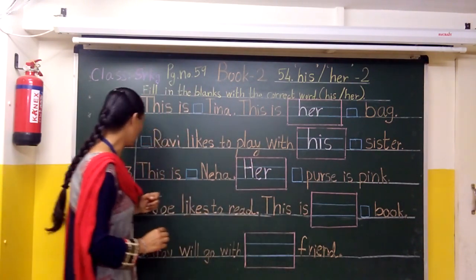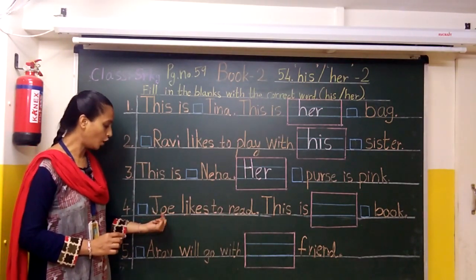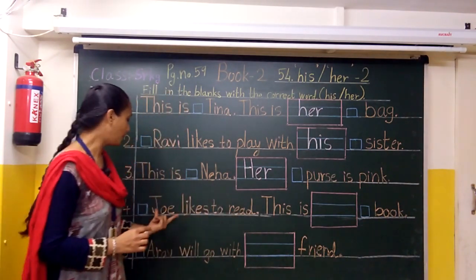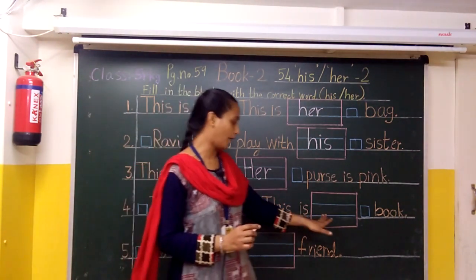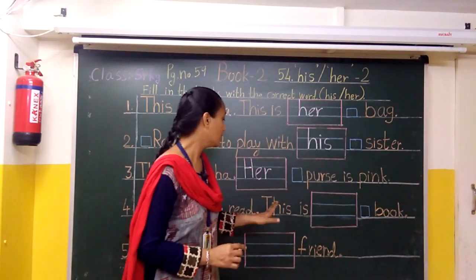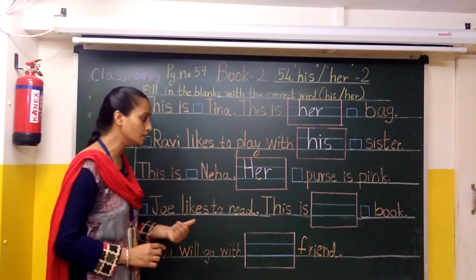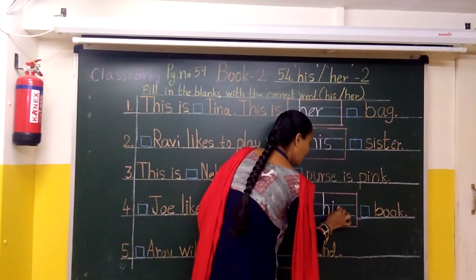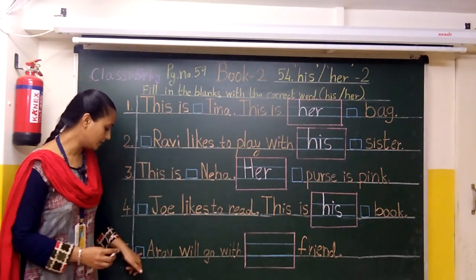Now here is a person — this is the image of a boy. J-O-E — Joe likes to read. This is here is the image of a book — B-O-O-K — book. This is the boy Joe. So we will write 'his.' This is his book. Okay, so we will write here H-I-S — his book.